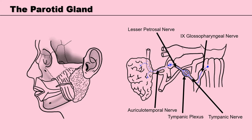Just after leaving the skull, the lesser petrosal nerve enters the otic ganglion, which is an autonomic ganglion. This is where the preganglionic fibres synapse with the cell bodies of the postganglionic fibres. The postganglionic fibres then join the auriculotemporal nerve, a branch of the mandibular nerve, which carries them to the parotid gland. The preganglionic and postganglionic fibres supplying the parotid gland are all part of the glossopharyngeal nerve, cranial nerve 9.